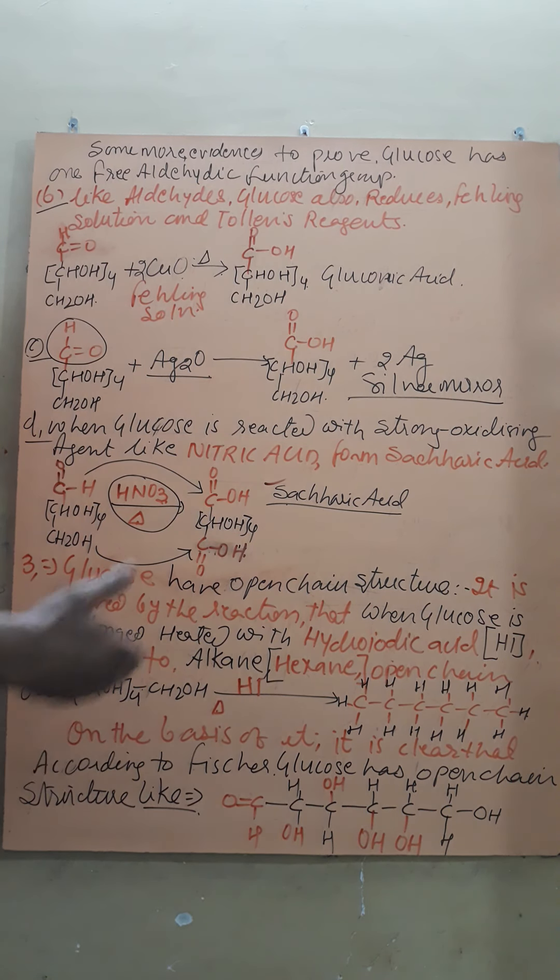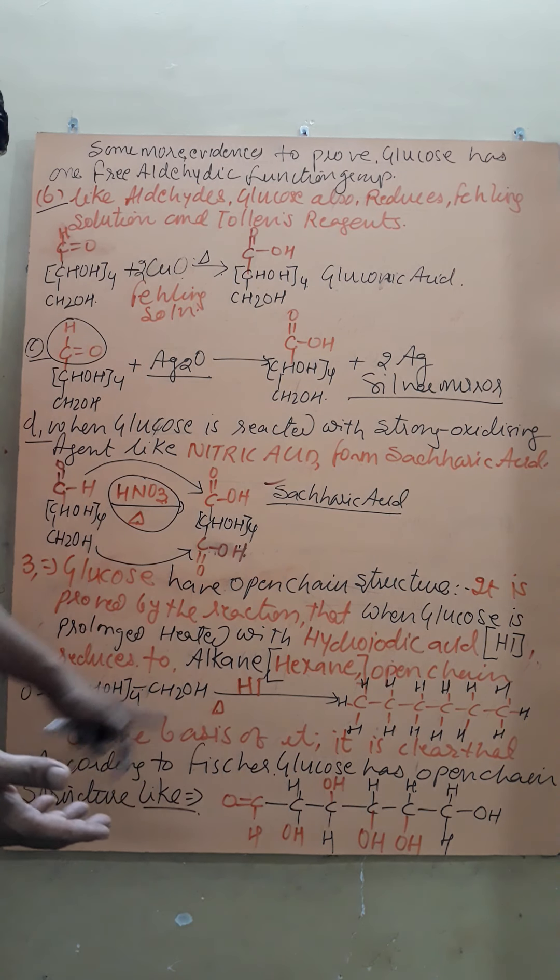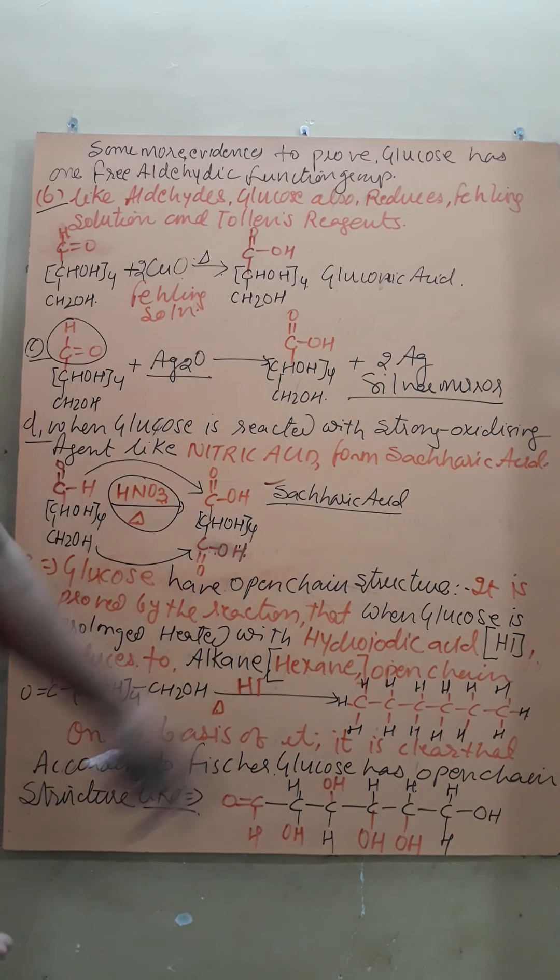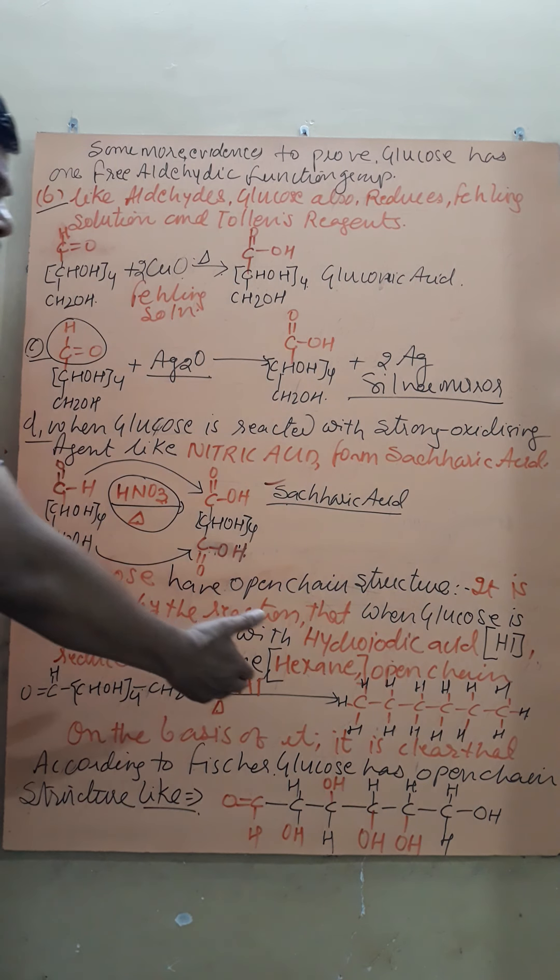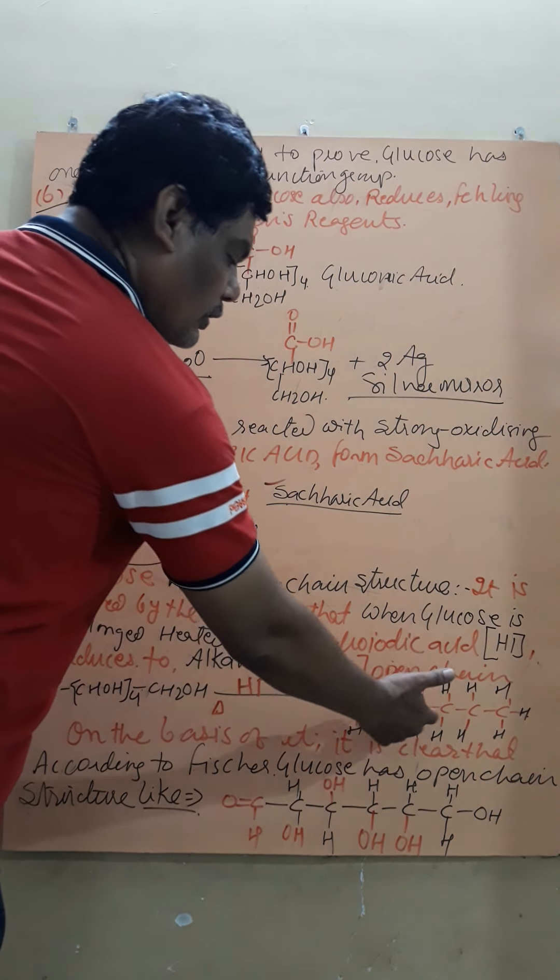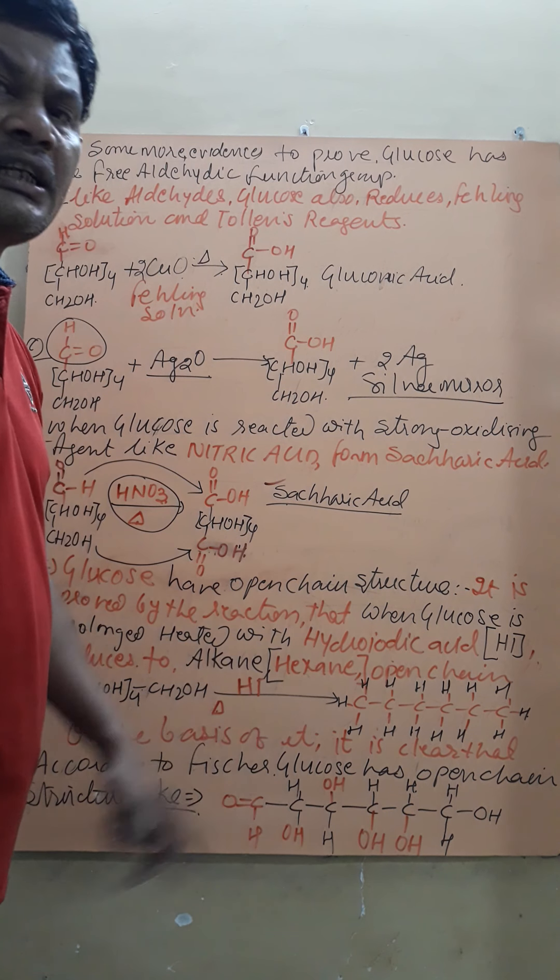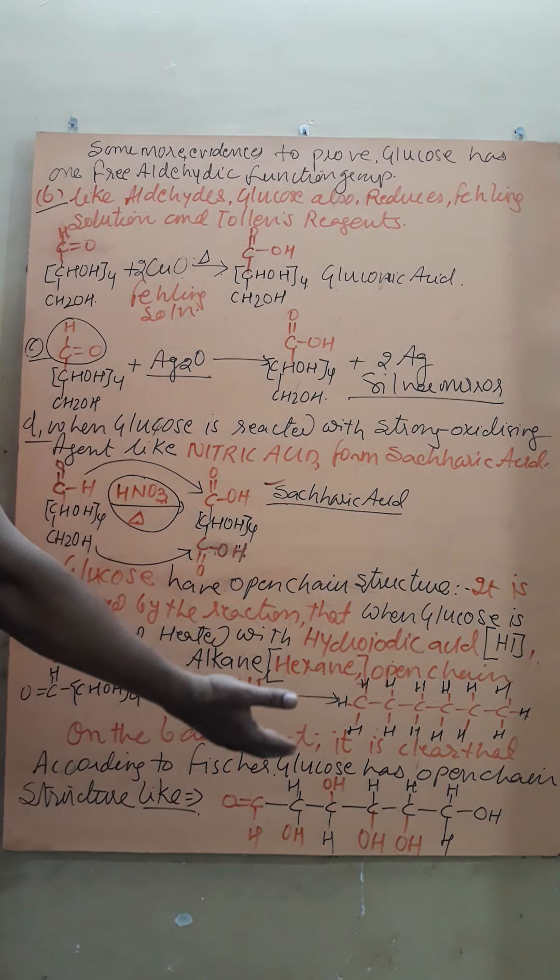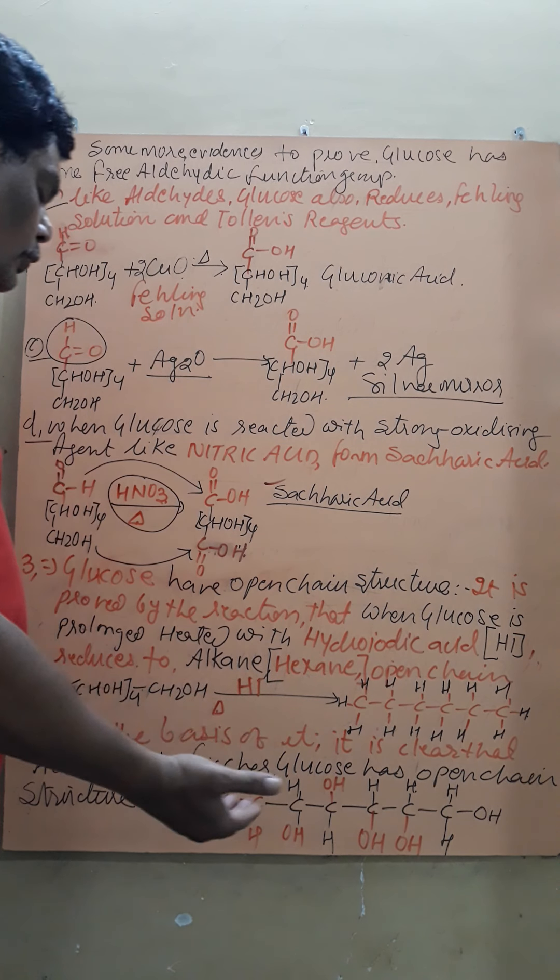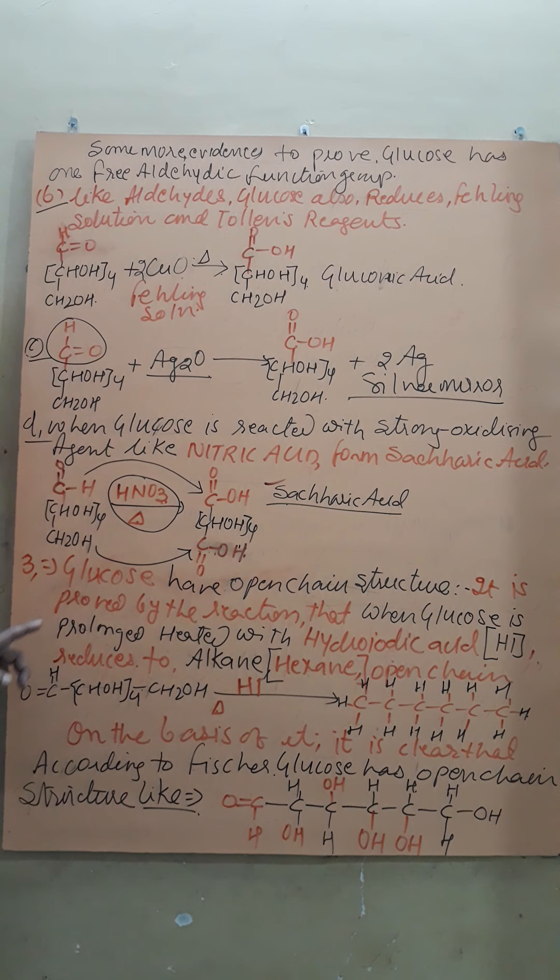Similarly, when glucose is reacted with hydroiodic acid, we have checked this reaction in the aldehyde chapter. It forms normal hexane. The formation of open chain compound shows that glucose has open chain structure in which there is one free aldehyde group and the six carbon atoms are attached one by one in straight chain manner.